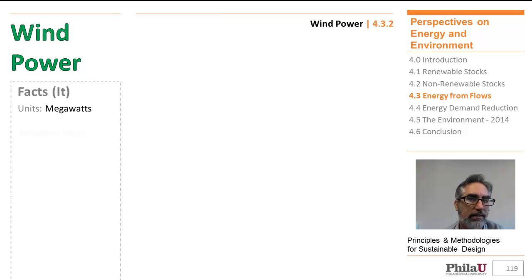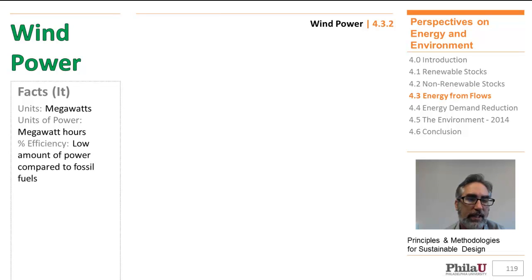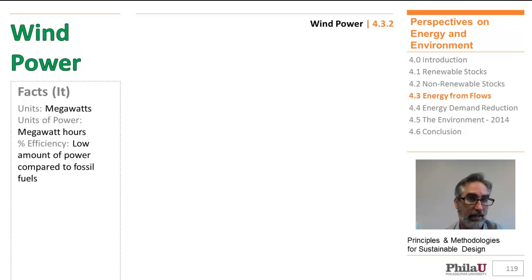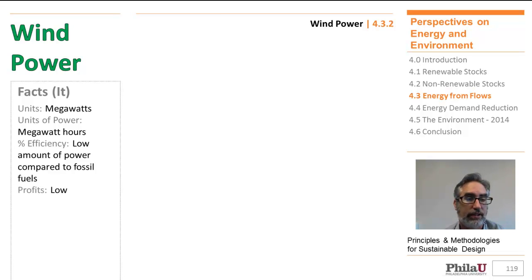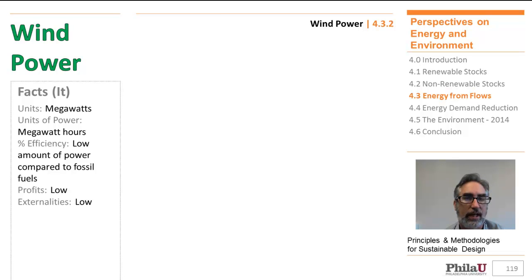Units: megawatts — units of power — and megawatt hours. Percentage efficiency is very low compared to fossil fuels, and also very low compared to the amount of land needed to generate the electricity, which might explain why profits might be very low. Externalities, though — negative externalities are very low. We'll get into that.